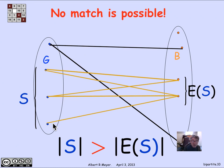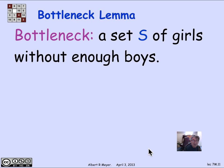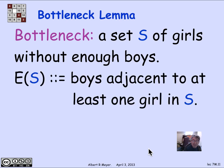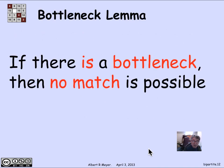More generally, the definition of a bottleneck is: if you have a set where the size of S is greater than the size of the image of S — |S| > |E(S)| — then that's called a bottleneck. The bottleneck lemma says that a bottleneck is a set S of girls without enough boys, and when there is one, no match is possible.